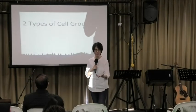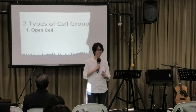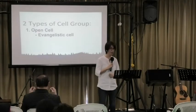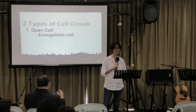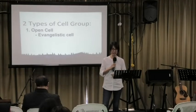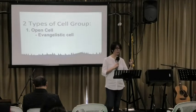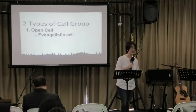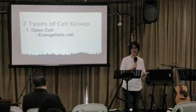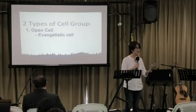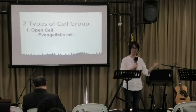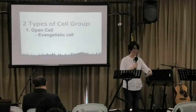I'd like to teach about cell group because we have two types of cell group. Number one is the open cell or the evangelistic cell. Cell groups exist for evangelism — one of the purposes of the cell group is for evangelism. We bring people to Christ through cell group. Pastor Rafi mentioned last night that rapid growth of the church happens through the cell group, because the people attending are encouraged to really bring in or invite people to the cell and eventually to the church.